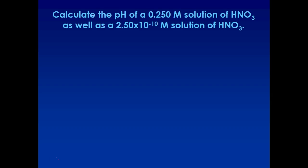So here I'm going to have you find the pH of a 0.25 molar solution of HNO3, a concentrated strong acid, and a 2.50 times 10 to the negative 10th molar solution. That would be a dilute strong acid. So for the first one, HNO3 is just going to split into H+ and NO3-.